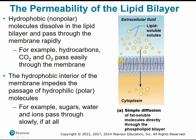Phospholipids are amphipathic, with a hydrophilic region and a hydrophobic region. The hydrophobic region of the lipid bilayer allows other hydrophobic, nonpolar, or lipid-soluble molecules to essentially pass through the membrane directly — kind of dissolving through. Some hydrocarbons like CO2 and oxygen can pass directly through the membrane through simple diffusion. On the other side, this hydrophobic interior repels hydrophilic or polar molecules, so things like sugars, water, and ions pass through much more slowly if at all.